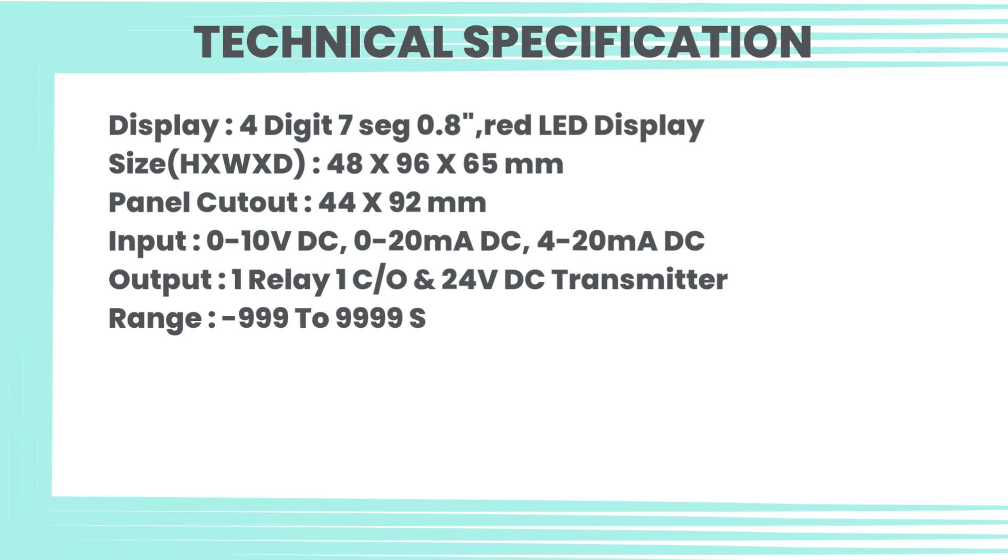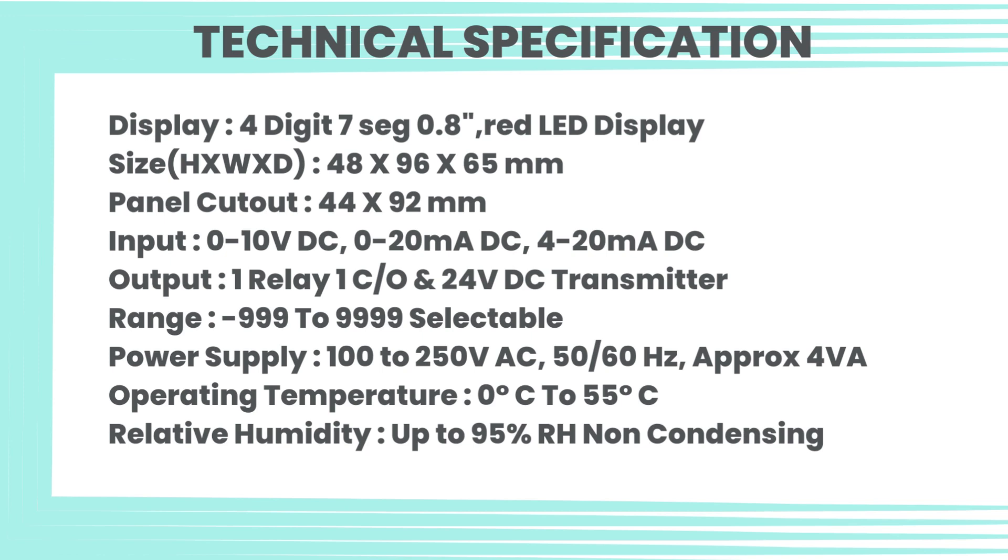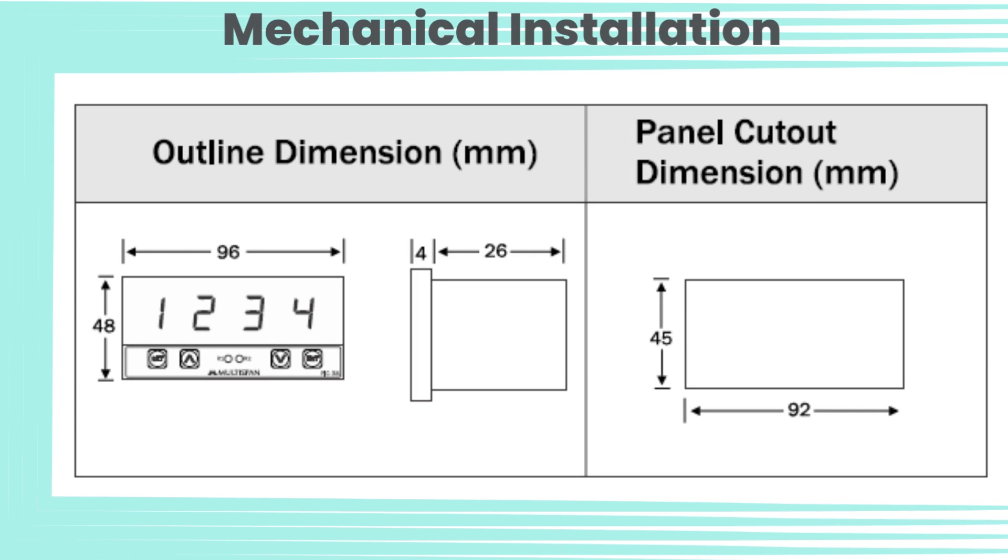Output one relay one CO and 24 volt DC transmitter, range minus 999 to 9999 selectable, power supply 100 to 250 volt AC 50-60 Hertz approximate 4 VA, operating temperature 0 degrees Celsius to 55 degrees Celsius, relative humidity up to 95% RH non-condensing mechanical installation.